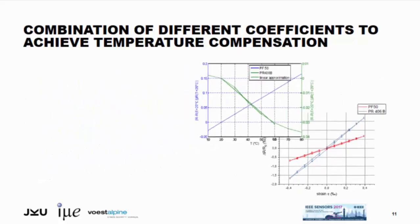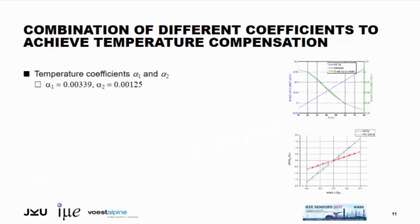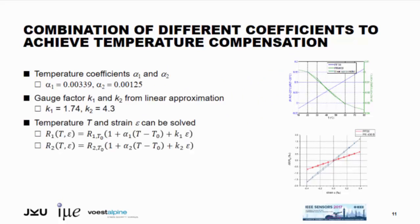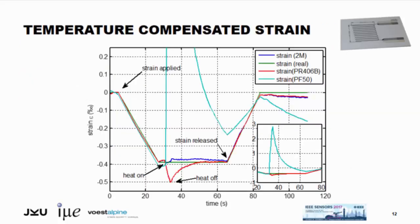So, what do we do with this now? We extract the two temperature coefficients, as I said before. We extract the two gauge factors, as also mentioned. And then we apply a set of linear equations which contain both the temperature and the strain. And now we measure temperature and strain on the same sample and employ the known values which we extracted from measurements before. And then we can calculate out of these equations because we just have to measure both resistances. Then we can calculate the temperature as well as the strain that was applied.